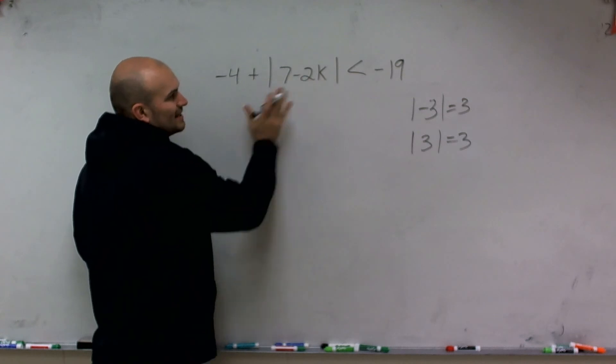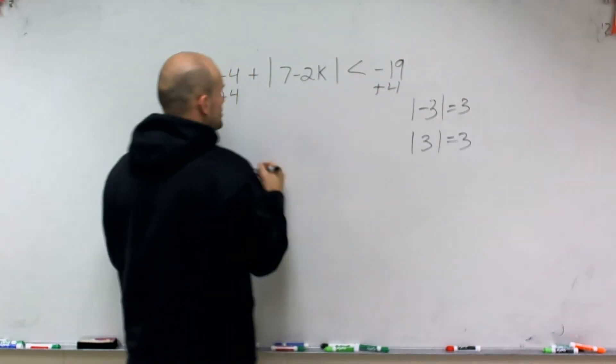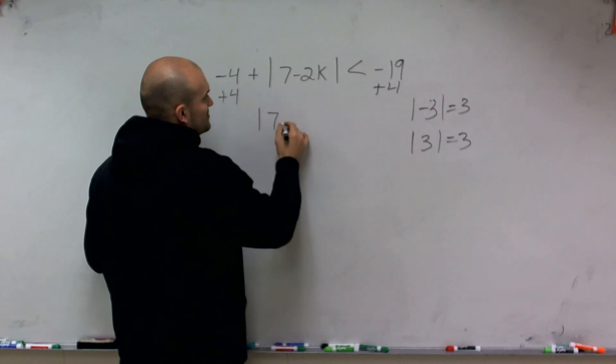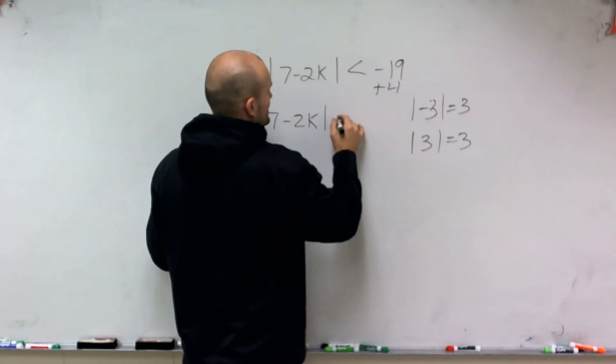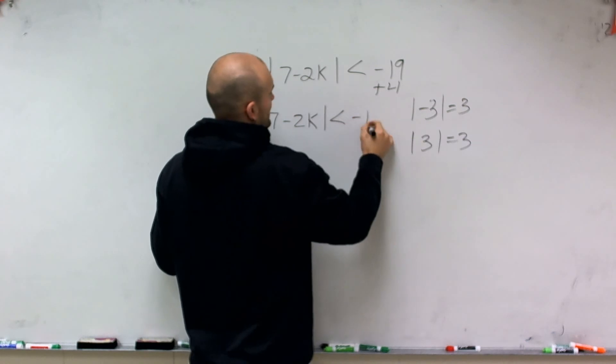The first thing we need to do is isolate the absolute value. So I add 4 to both sides, and therefore I'm left with |7 - 2k| < -15.